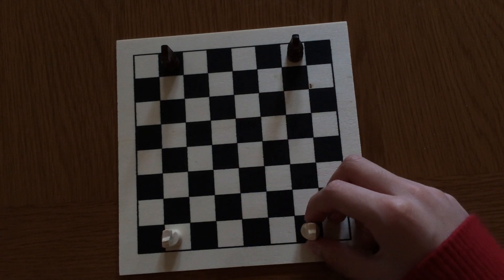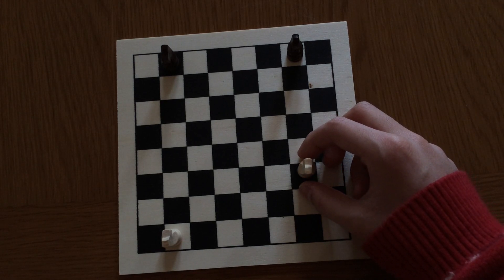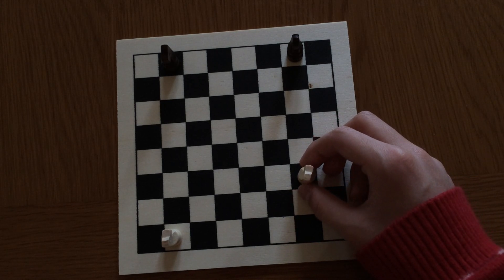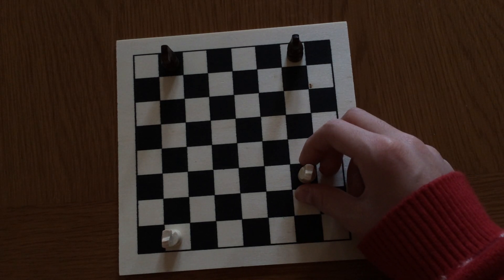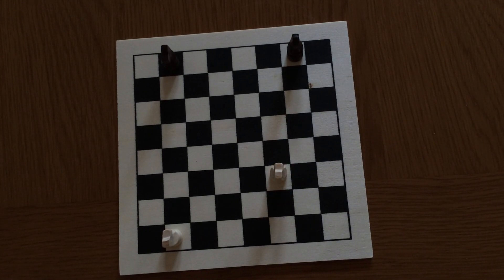So it goes forward two squares in any direction, and then it turns left or right, and then one square in that new direction.